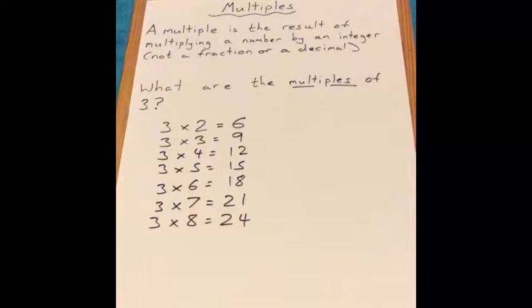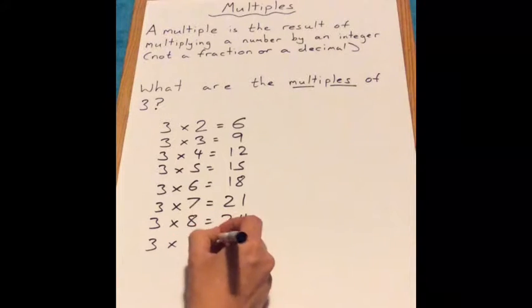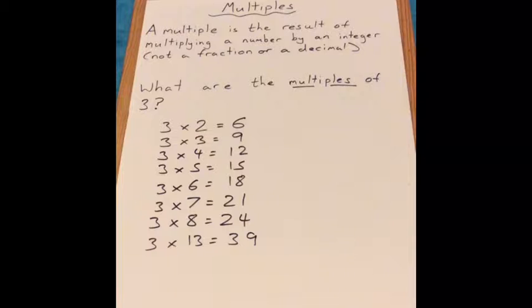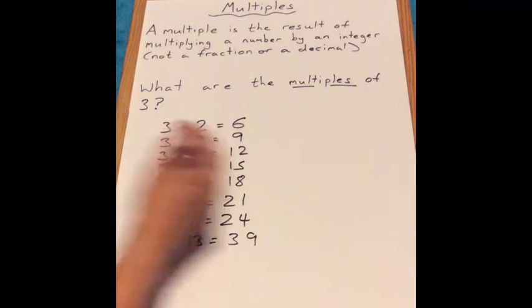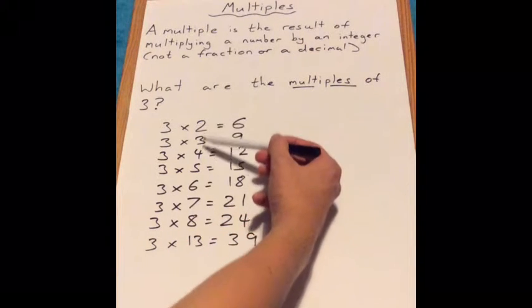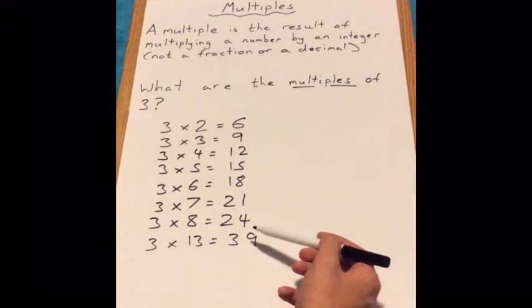And we could keep going. We could even do 3 times 13, which gives us 39. So 39 is also a multiple of 3. So what we've done is we've multiplied a number by an integer, which remember is not a fraction or a decimal but a whole number, which gave us a multiple. These are the multiples of 3.